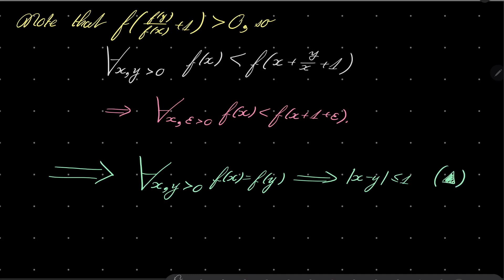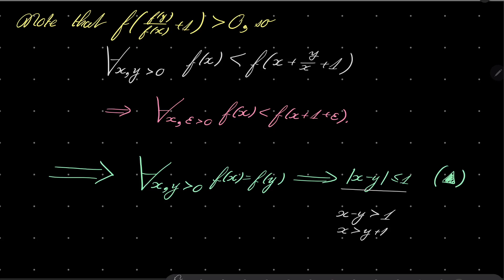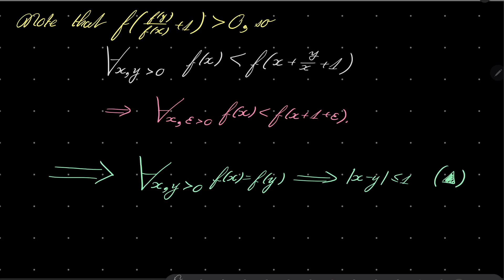Let's talk through this condition — why is it the case? Because if this is not so, for example if x - y > 1, so x > y + 1, then we get a contradiction with the strict inequality we established. The same is true if y - x > 1 — we also get a contradiction. So if the values are the same, the arguments must be distant one or less from each other.